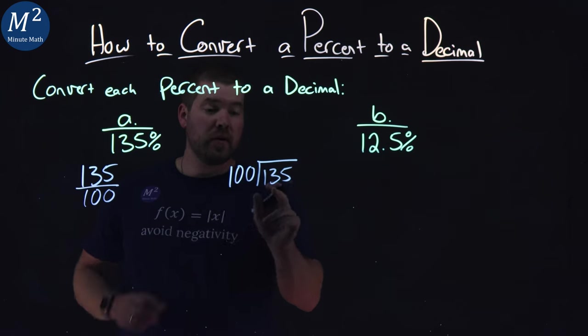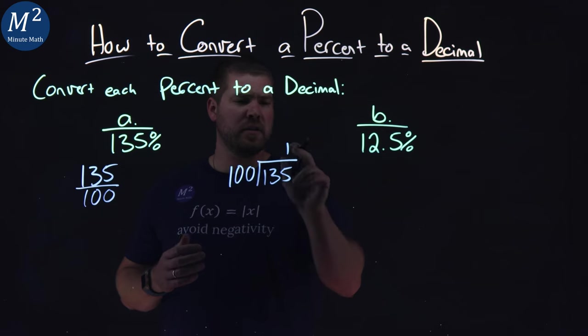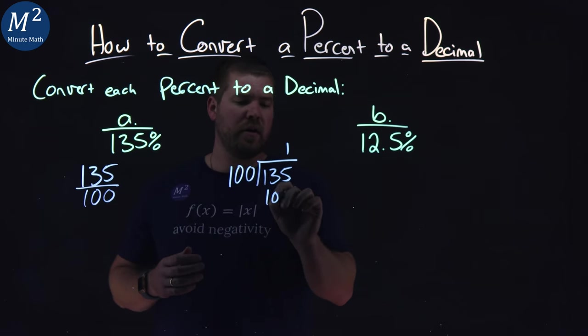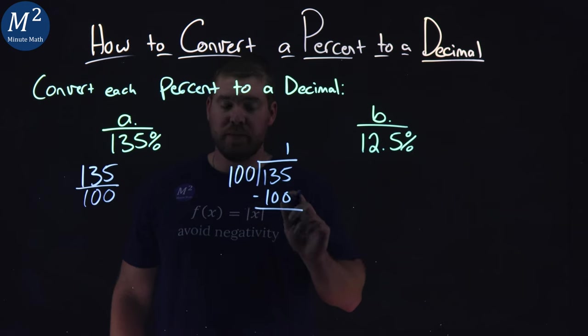Can 100 go into 135 one time? Long division here. 1 times 100, 100, subtract the two. 135 minus 100, we've got 35.